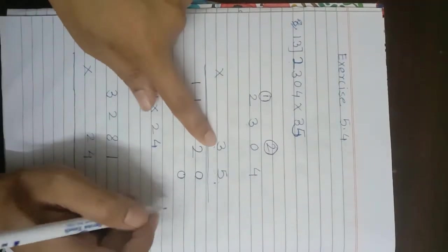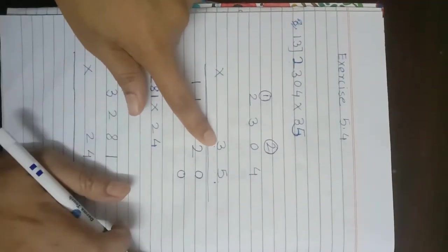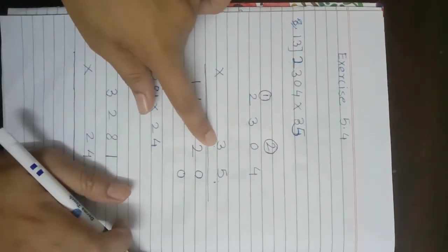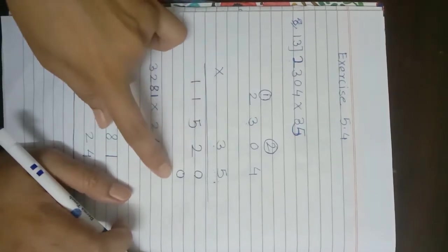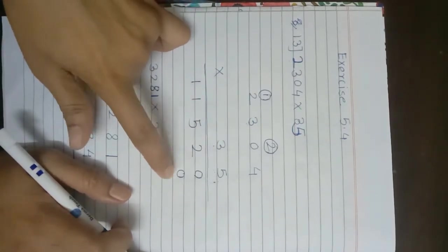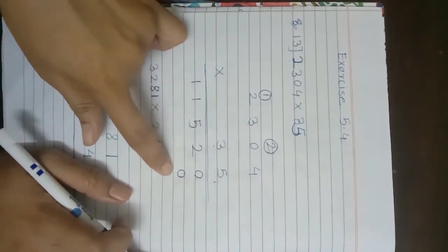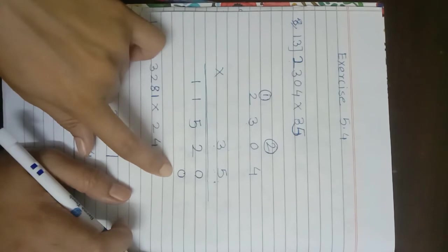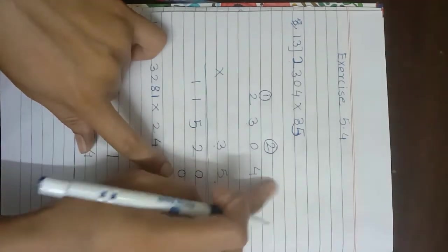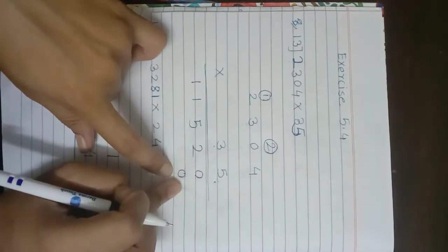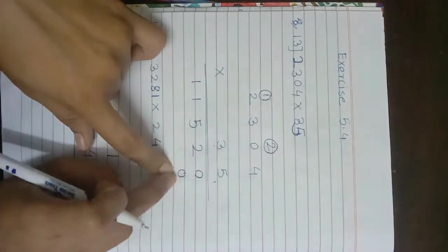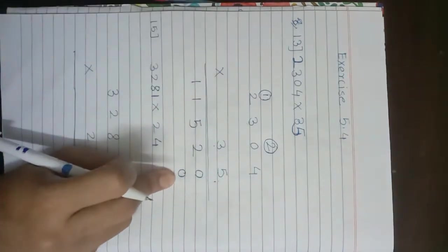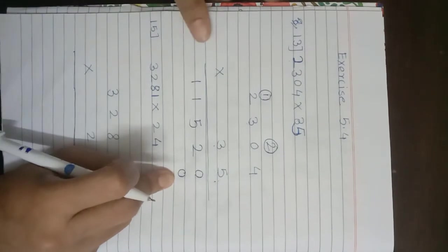Jab bhi hum tens place ke digit se multiply karte hain multiplier ke, tab ones place mein zero likhna hota hai. Ab multiplication shuru karenge.